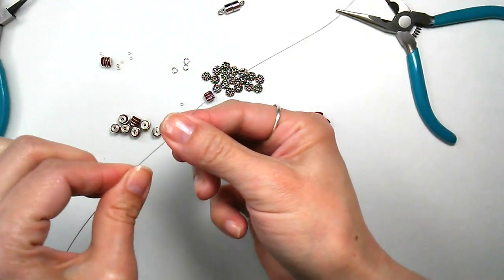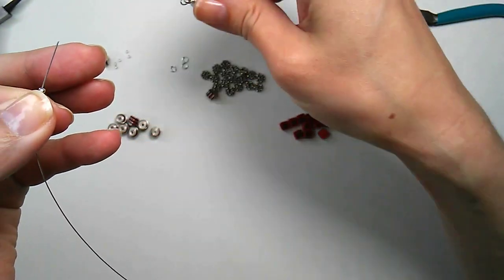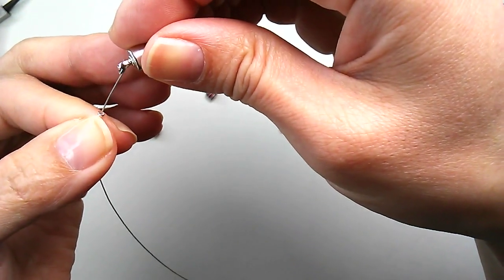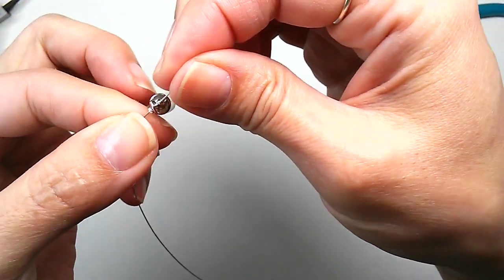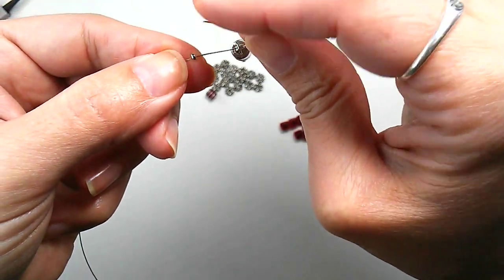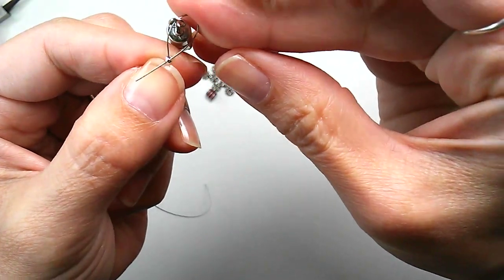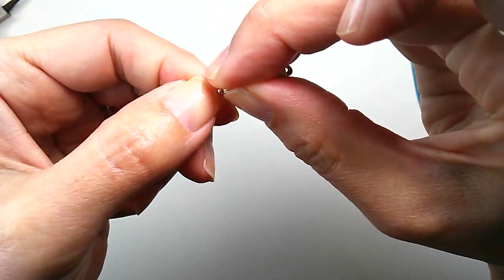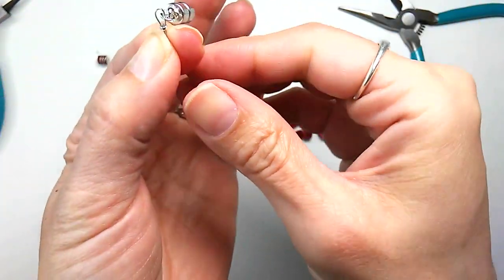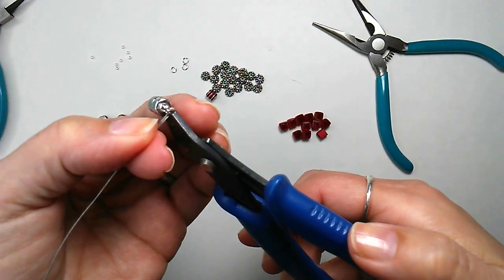Take the tiger tail wire and slip on a crimp bead. Then thread the wire through one of the jump rings and then back through the crimp bead. Slide the crimp bead up close to the jump ring and squish it closed.